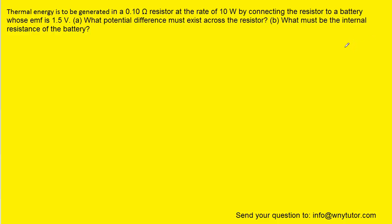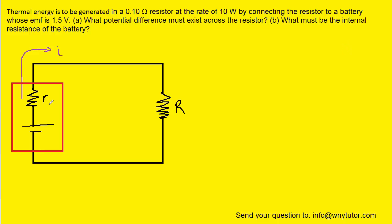What we can do first to solve this question is to draw a picture of this simple circuit. Here we have the picture of the real battery, which is outlined in red. You'll notice that the real battery contains the classical symbol for a battery with the small line and then the larger line, and then this internal resistance labeled lowercase r. We also have the other resistor labeled as uppercase R, which has the value of 0.10 ohms. We can label the battery symbol with E for EMF, and we were told in the question that the EMF is equal to 1.5 volts.